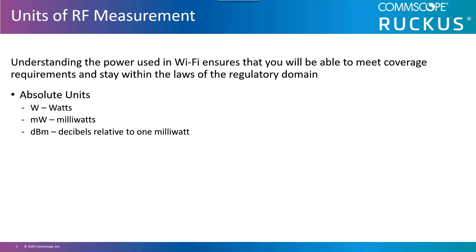Remember, the signal gets weaker exponentially as it propagates away from the transmitter. That 100 milliwatt signal will be received at a strength so weak by comparison that it has a negative decibels measured value, such as negative 80 dBm — the strength needed for basic connectivity.